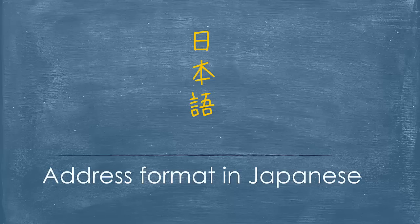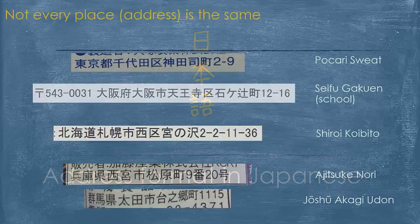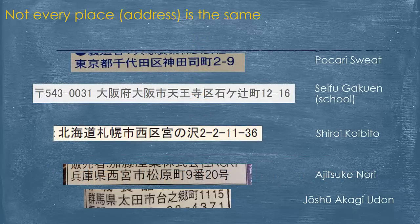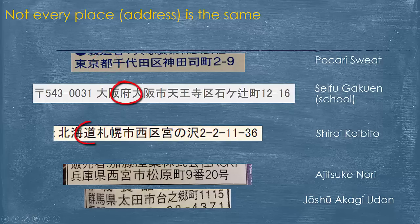In this video we're going to look at the difference between the written form of the address and also how you say where you live in Japanese. The first thing to note is that not every place follows the same pattern or the same method of describing where the location actually is. Take for example the top one is from Tokyo and the others are from different areas throughout Japan. You'll notice that the suffix character used is quite different in each case, and that's what we'll try and clarify in this video.